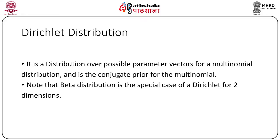The Dirichlet distribution is over possible parameter vectors for a multinomial distribution, and it is the conjugate prior for the multinomial. That means if you take the product of the multinomial density with the Dirichlet prior, the posterior will be proportional to another Dirichlet distribution, after adjusting the normalizing constant.